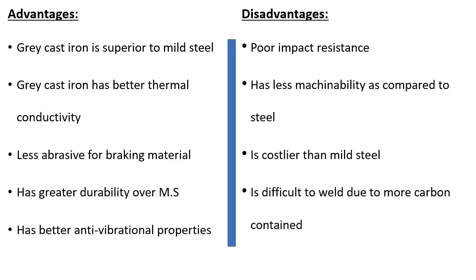Advantages of grey cast iron: it is superior to mild steel, has better thermal conductivity, less abrasive braking materials are required, greater durability over mild steel, and better anti-vibrational properties. Disadvantages: poor impact resistance and less machinability compared to steel.